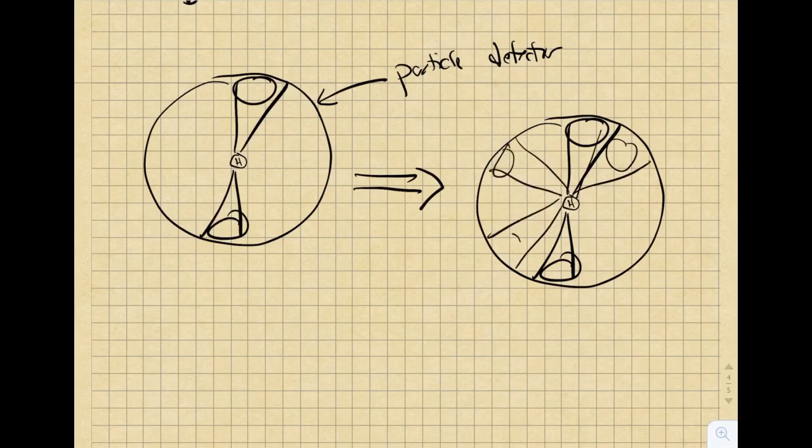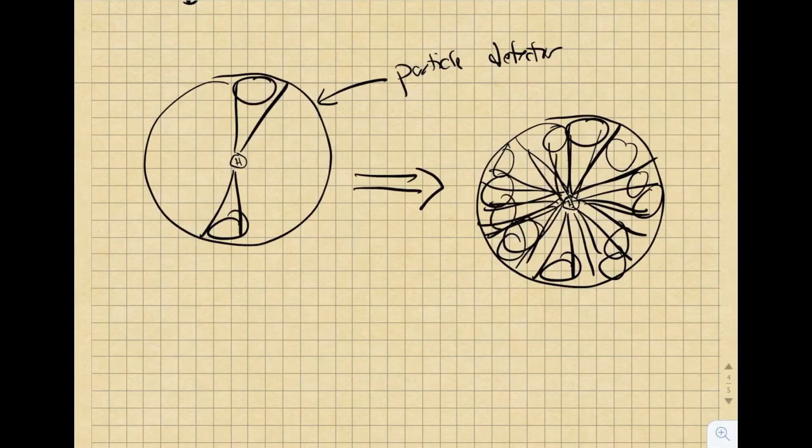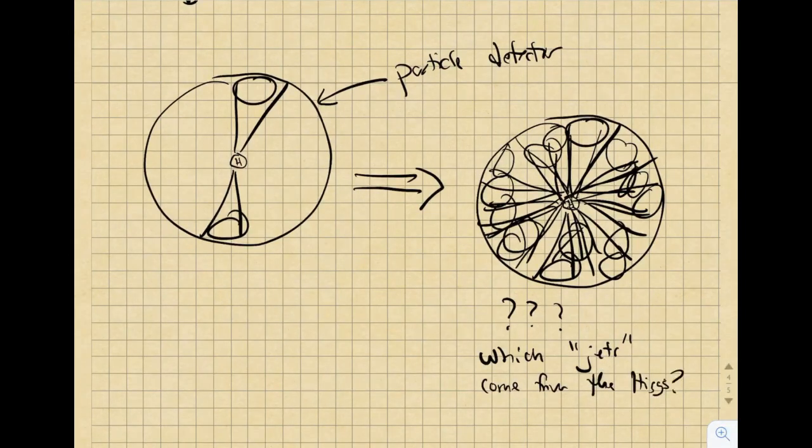Protons are made of lots of stuff. And often, lots of protons in one interaction will actually smash together into one another. And this makes something like an average of 15 jet objects in a particle detector at one time. So even in one proton-proton interaction cycle, you have a mess to sift through. Which are the jets that came from the Higgs? Can you even tell anymore?